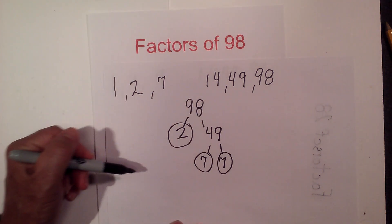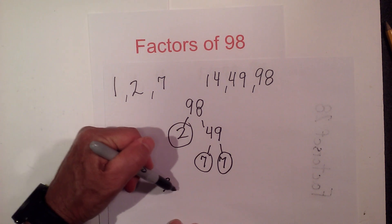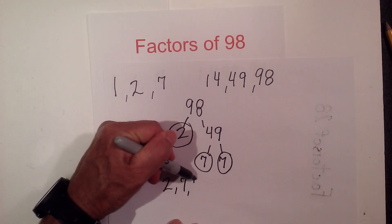And now 7 times 7 equals 49. Circle the 7 because it is prime. So the prime factors of 98 are 2, 7 times 7.